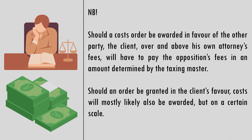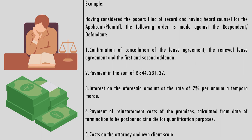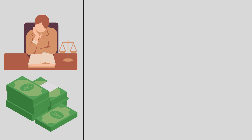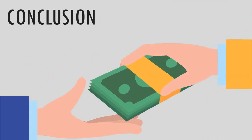Before we get to the next episode, it is extremely important to note that should a cost order be awarded in favour of the other party, the client — over and above his own attorney's fees — will have to pay the opposition's fees in an amount determined by the taxing master. Furthermore, should an order be granted in the client's favour, costs will most likely be awarded but on a certain scale. There are three scales on which costs may be awarded: party and party, attorney and client, or attorney and own client. The quantum of costs recoverable will depend on the scale awarded. In the next episode, we will be discussing costs as between party and party.